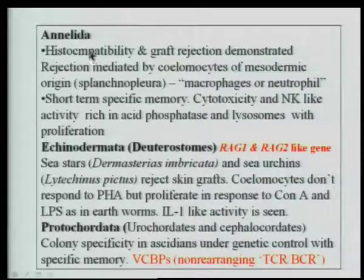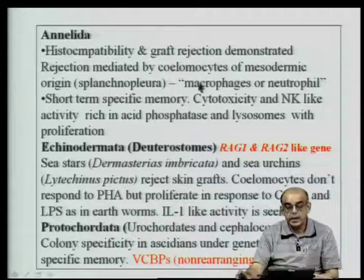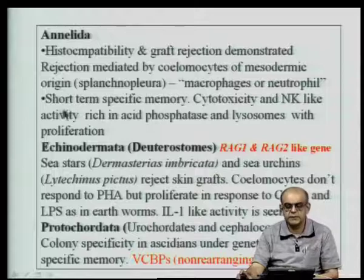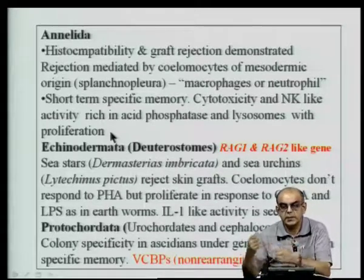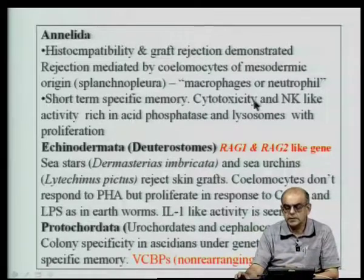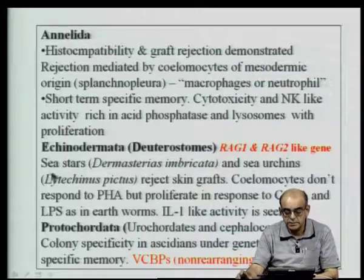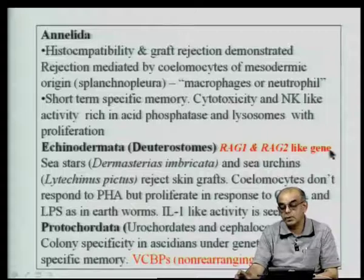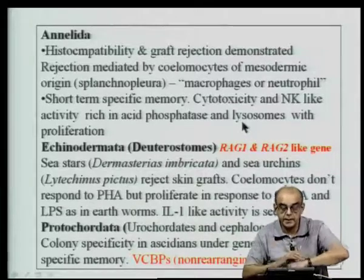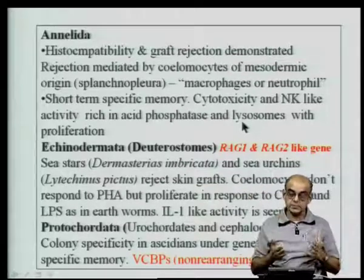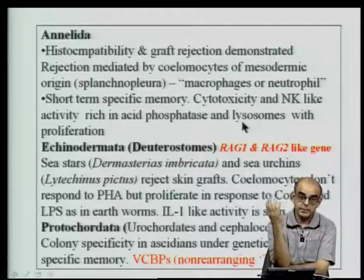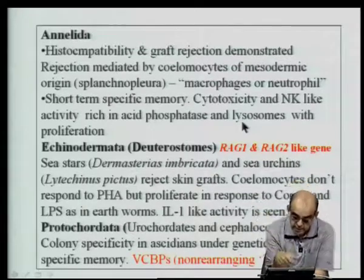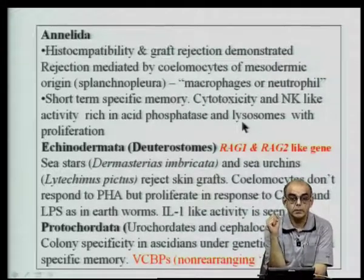Going on to annelida, some graft rejection has been demonstrated, mediated by coelomocytes, with some sort of short-term specific memory — if you take the same skin graft and again graft it to the same earthworm, there is a somewhat accelerated rejection. Certain cells are rich in acid phosphatases and lysozymes. Coming to Echinodermata, with sea stars and sea urchins, you find the early presence of RAG1 and RAG2 — the first organisms where RAG1 and RAG2-like genes are present within the genome. Just like mammalian cells proliferate in response to Con A, thymocytes from sea urchins also proliferate when Con A is added.